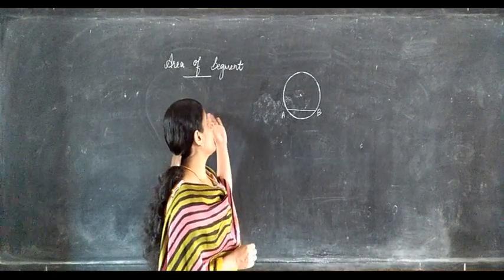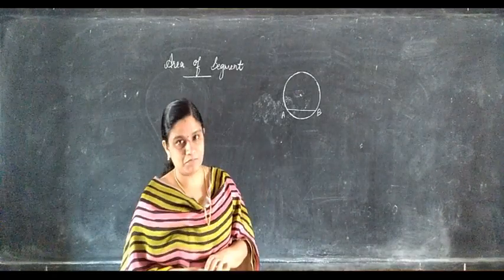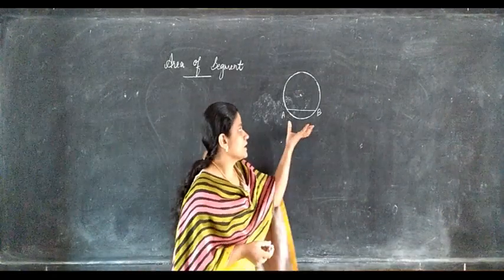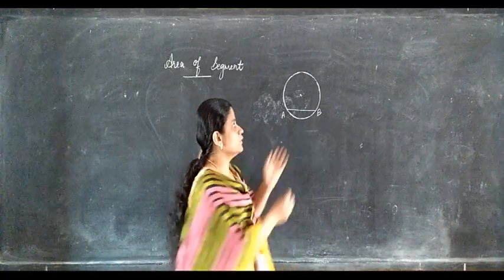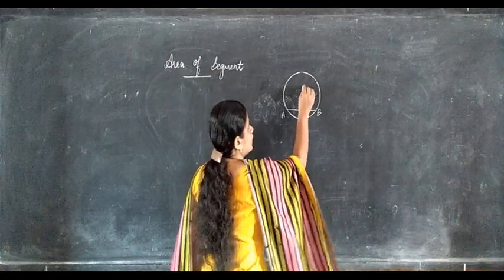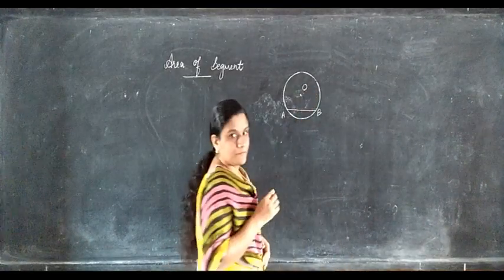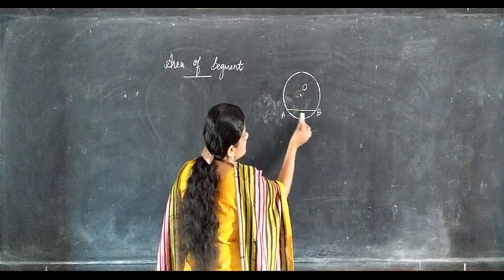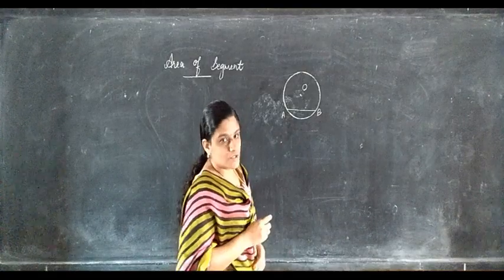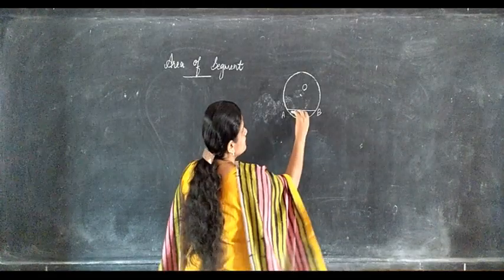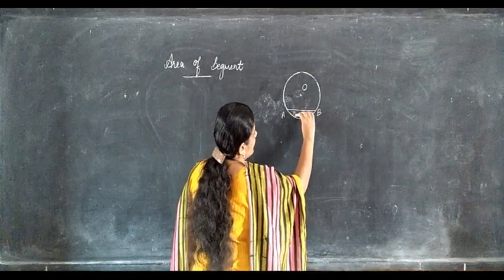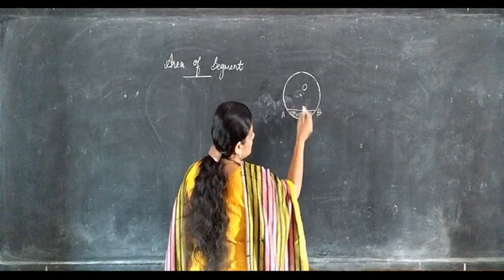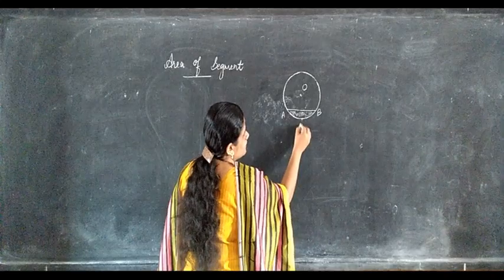How can you find the area of a segment? You see, this is a circle with center O. We have to find this area — it will be APB.